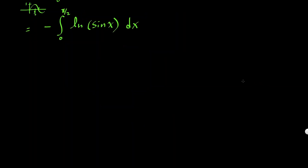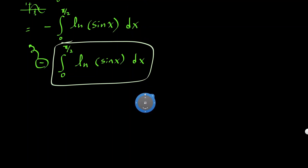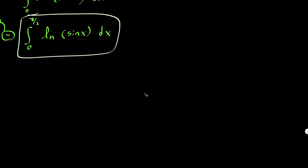So it all becomes just 0, leaving us with negative of the integral from 0 to pi over 2 of natural log of sine x. We have to figure that out. I'm going to focus on the integral from 0 to pi over 2 of natural log of sine x — let's figure out what this is first, and then at the end I'll multiply by negative.